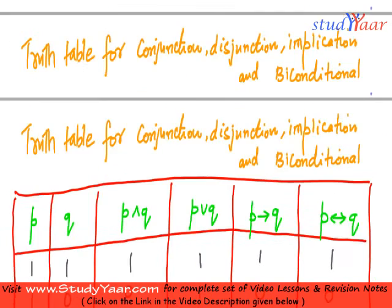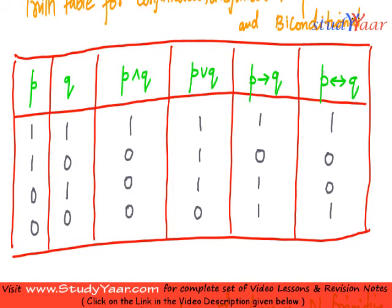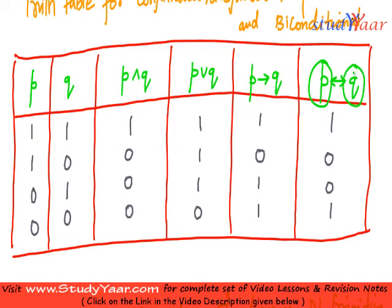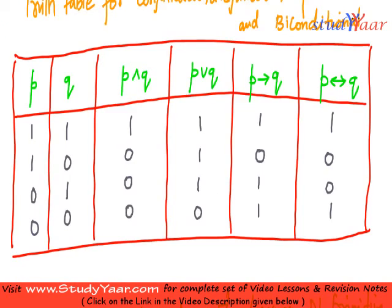Just like over here — all these are compound statements. How many primitive propositions are they having? They are having two primitive propositions, p and q. Therefore they have 2 raised to 2, which is 4 rows in the truth table: row number 1, row number 2, row number 3, and row number 4.